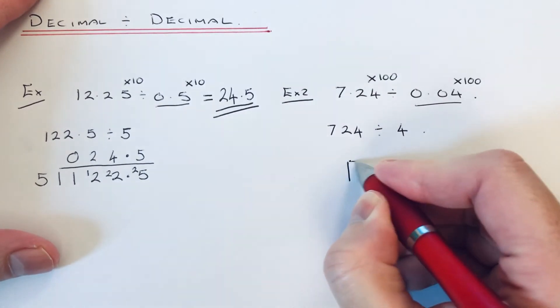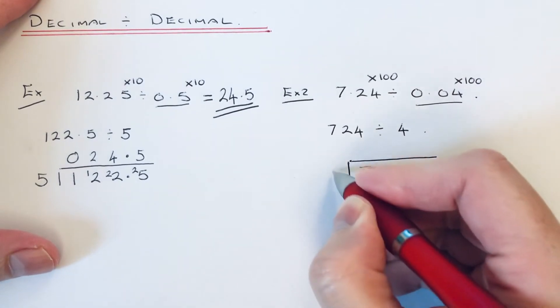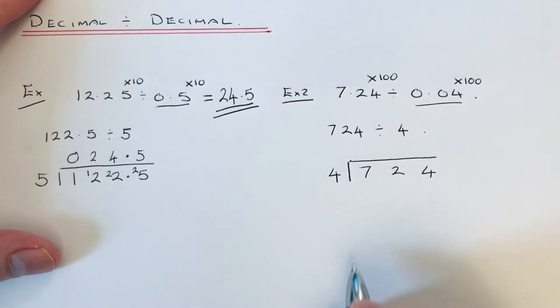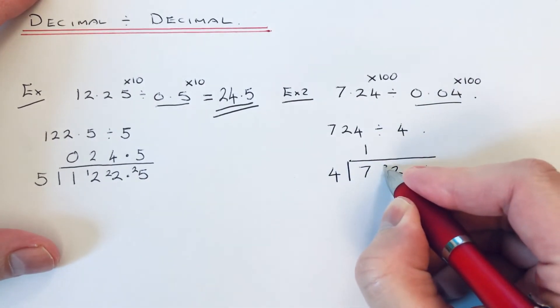So again, I'm going to do it by short division. The number that I'm dividing by is 4. So 7 divided by 4 is 1, remainder 3.